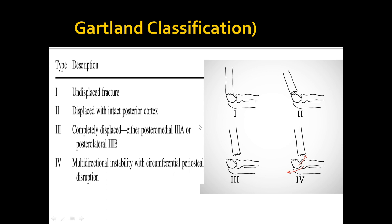The Gartland classification is used to characterize the extension type of supracondylar fracture for management purposes. Type 1 is an undisplaced fracture. Type 2 is displaced with an intact posterior cortex. For types 1 and 2, conservative management with cast and reduction can normally be performed.